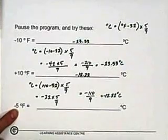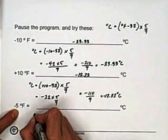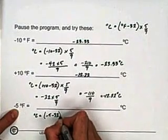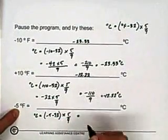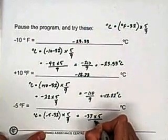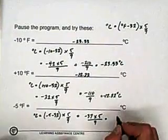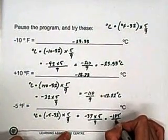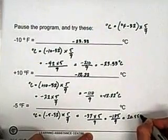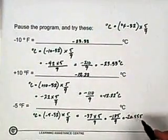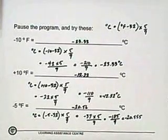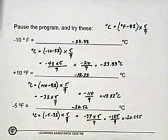Finally, minus 5 degrees Fahrenheit — what is that in Celsius? Using the formula, degrees Celsius equals minus 5 minus 32 times 5 over 9, which is minus 37 times 5 over 9, minus 185 over 9, or 20.5555 repeating. Rounded, that's negative 20.56 degrees Celsius. Remember those negative signs — you have to keep track of those.